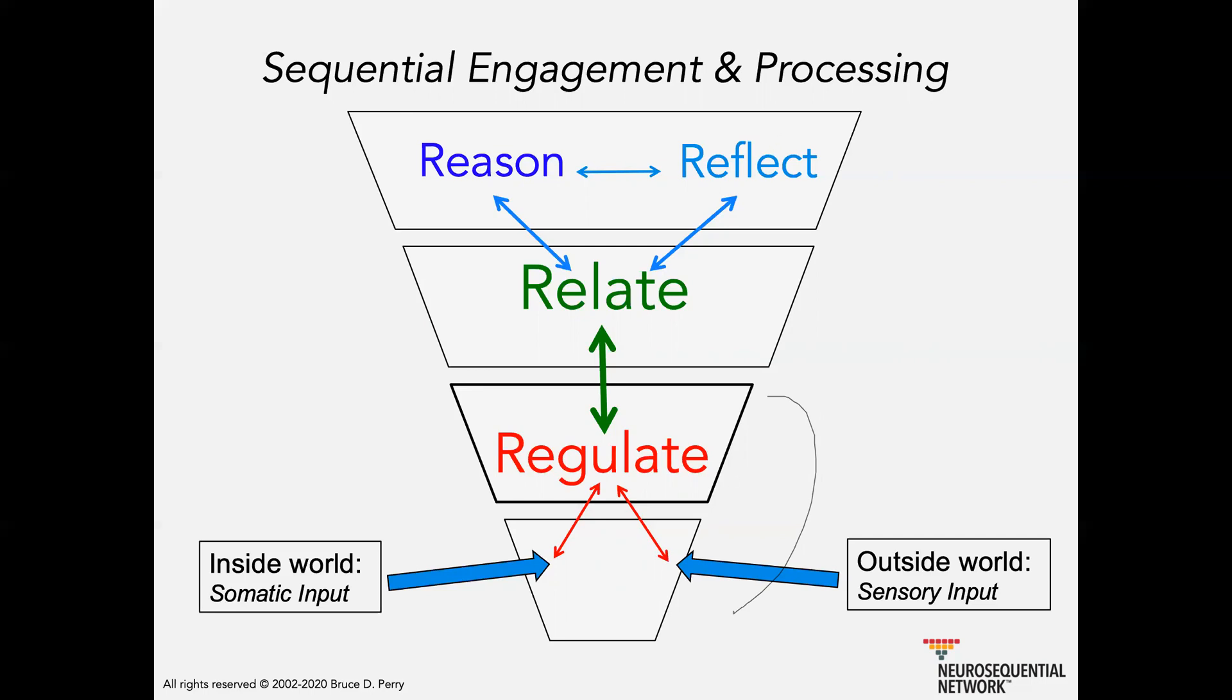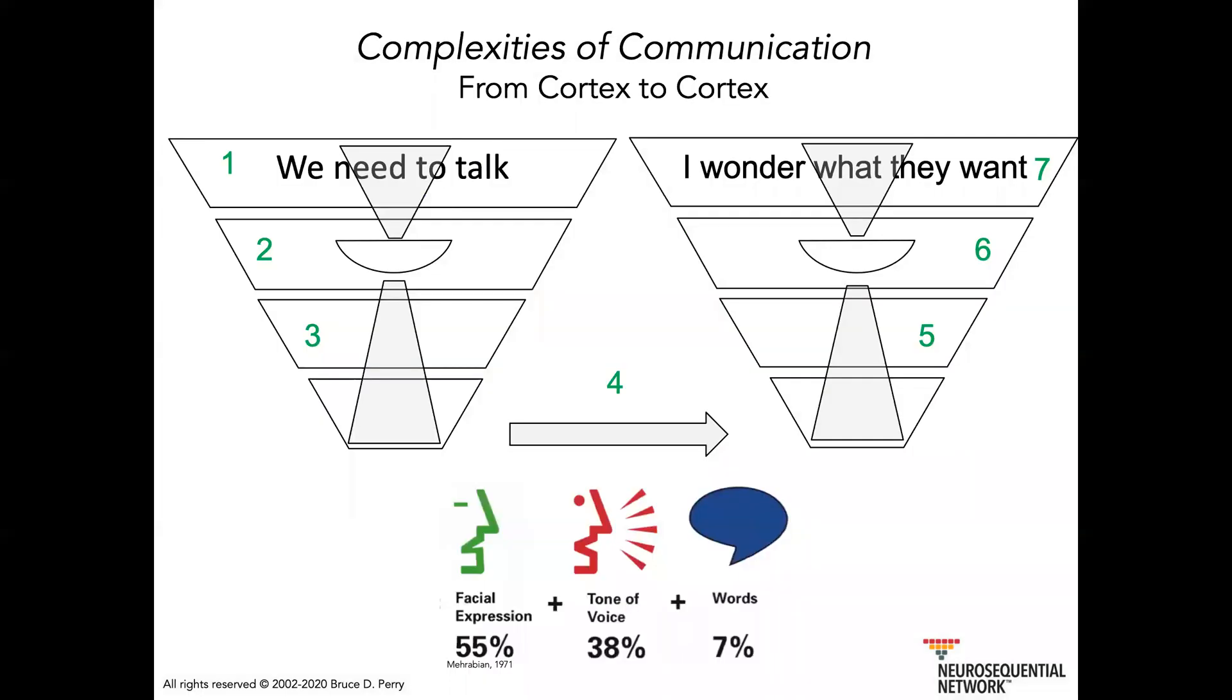So, again, the ability to use these really smart parts of our brain to reason and to reflect really requires that we are regulated to a certain degree. Let me talk about the challenge of this a little bit. Many of you have probably heard about Mehrabian's meta-analysis of some reviews about communication. And this is something that's been distorted a little bit. But the bottom line is that it turns out that the nonverbal aspects of communication are very important in getting the meaning and the intentionality of communication across. And the words are important, but relative to the nonverbal components of communication, they're not as powerful. And I think a big part of that is related to this sequence of engagement.